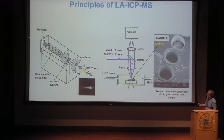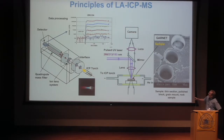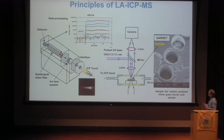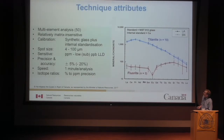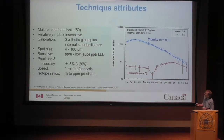Most ICP-MS is a single detector instrument, so you switch the voltages on the quads to let each ion of different mass through to the detector sequentially. Those counts are sent to a computer for data processing. The beauty of this technique is its flexibility — you can analyze almost any sort of sample with very little sample preparation: thin sections, polished blocks, grain mounts. As long as you can fit it into the cell, you can analyze it. You can analyze most elements in the periodic table, except for a few light elements. We typically analyze 50 elements or so simultaneously.